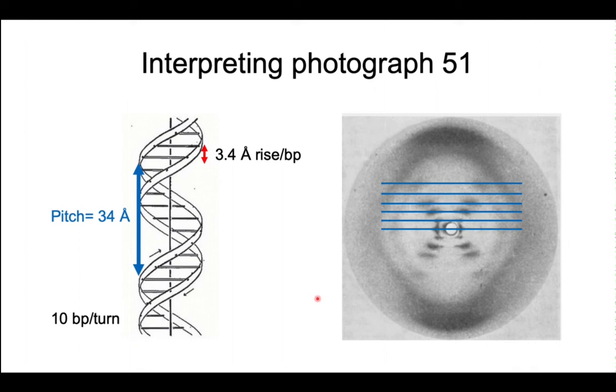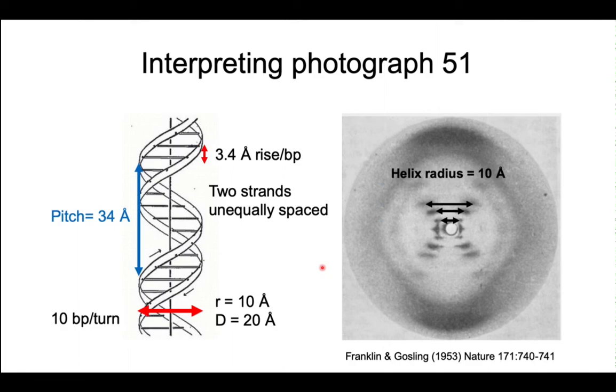Now if we look closely at the layer lines, you actually see that there are missing spots on this fourth layer line. With a single strand of DNA, you would expect to see spots here as well. The missing layer line tells us that there's more than one strand wound around one another, and that those strands are not symmetrically placed. So they're asymmetric, and that was the clue that there's a major and a minor groove in the DNA.